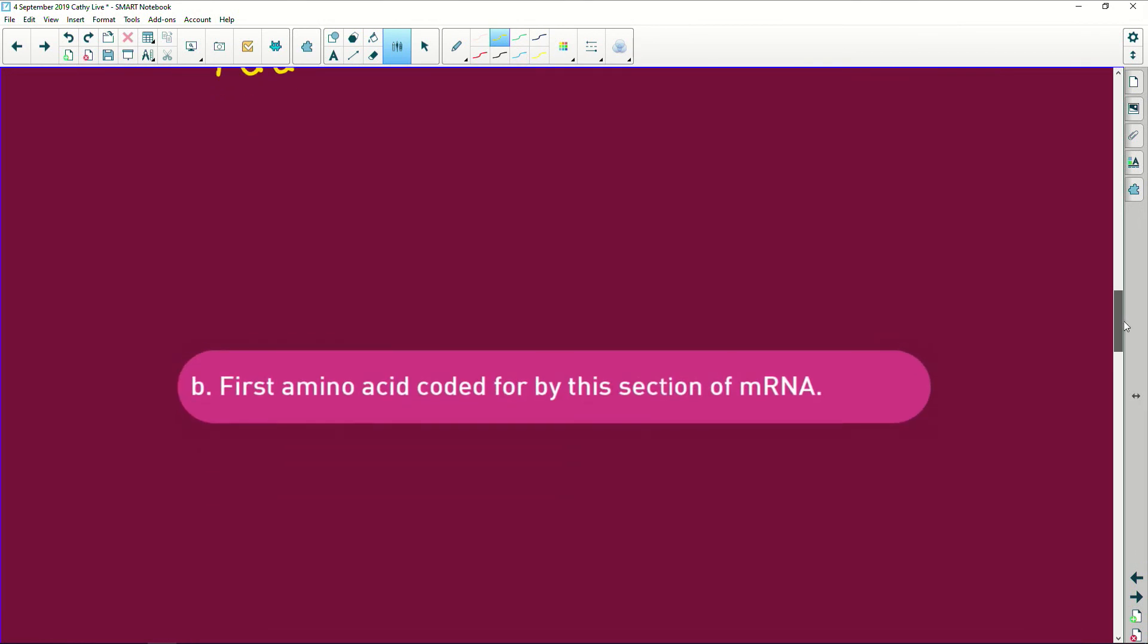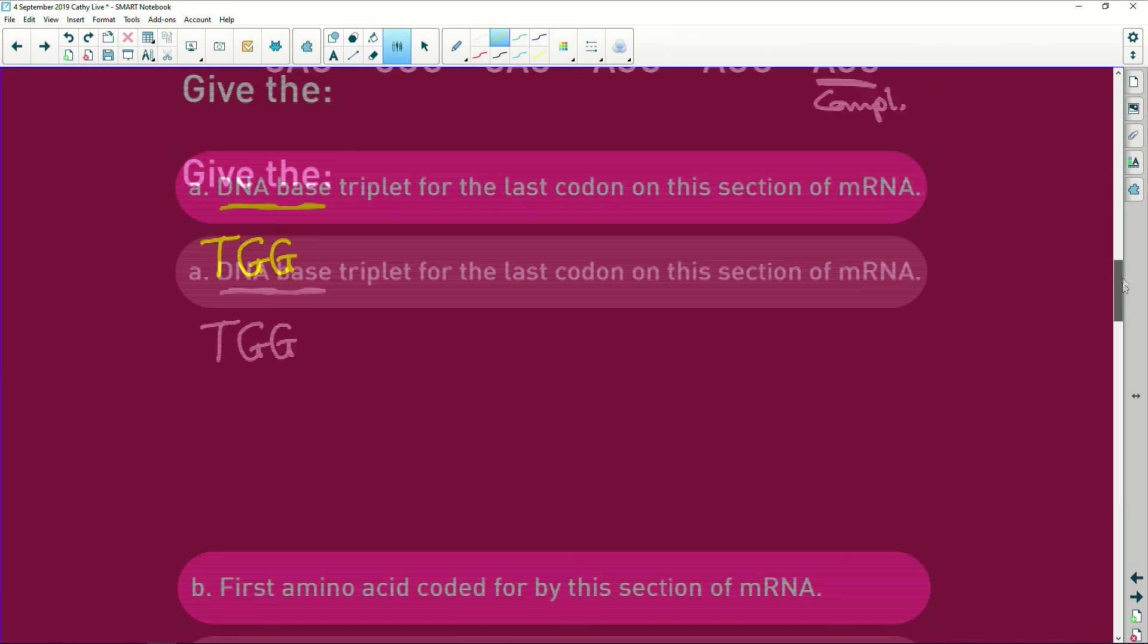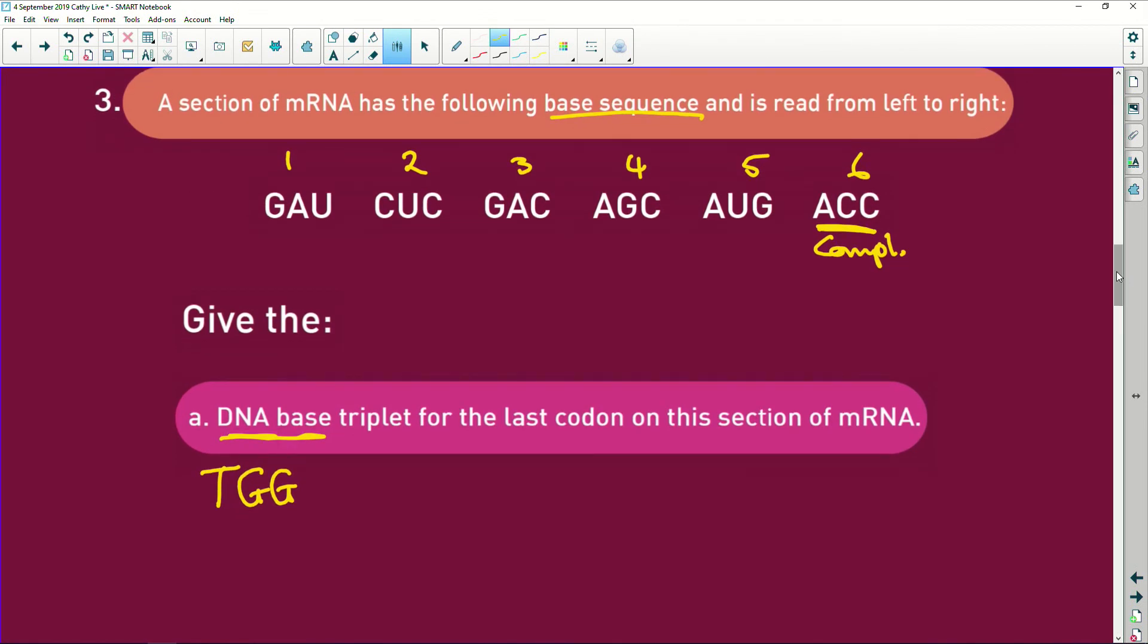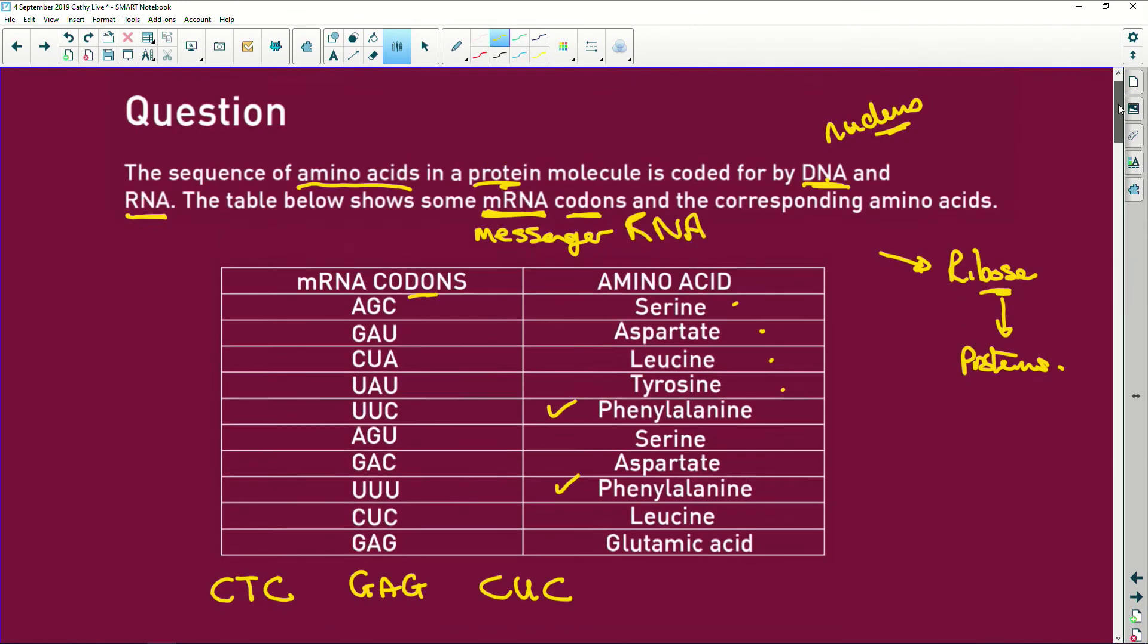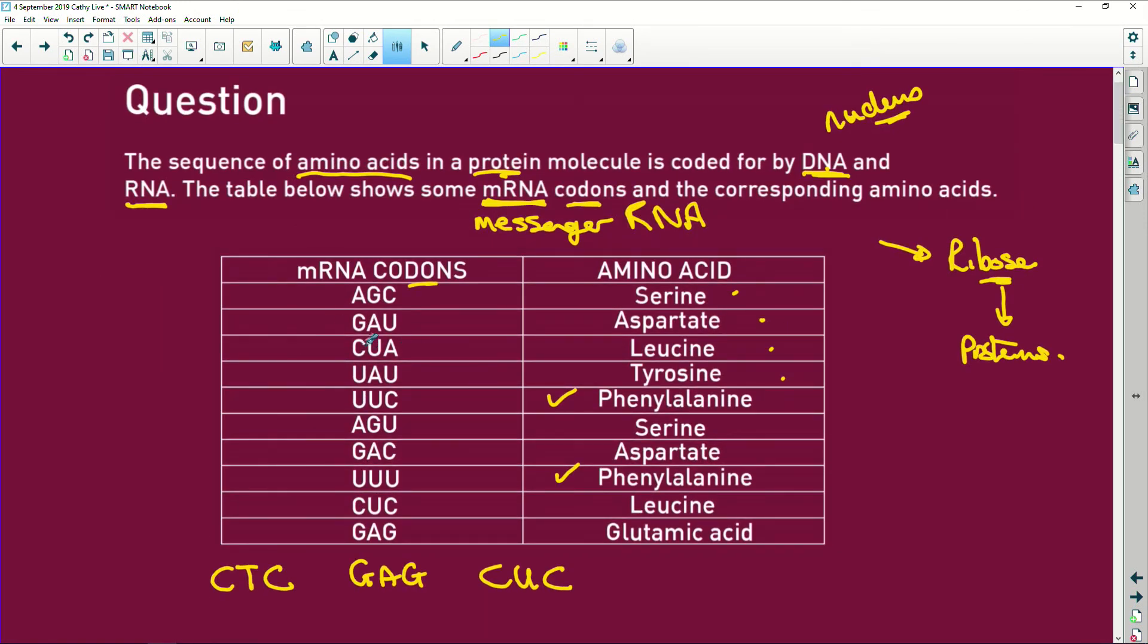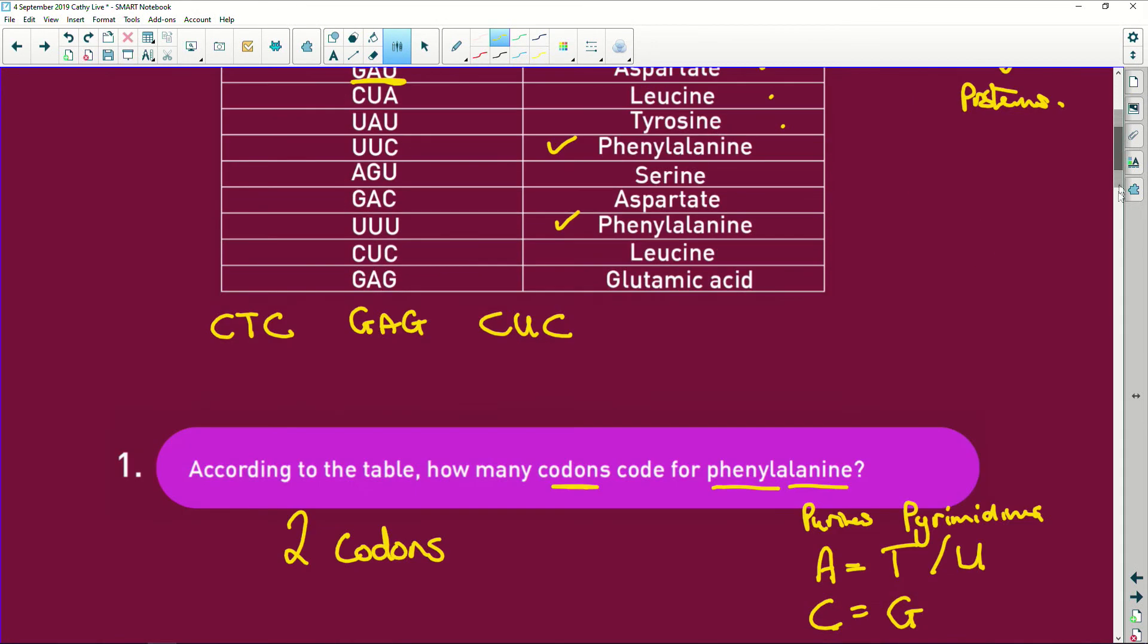The first amino acid coded for by this section of RNA, so the first amino acid is GAU. We'll go back up here, GAU, there we go, there's GAU. It's aspartate, there's our amino acid.